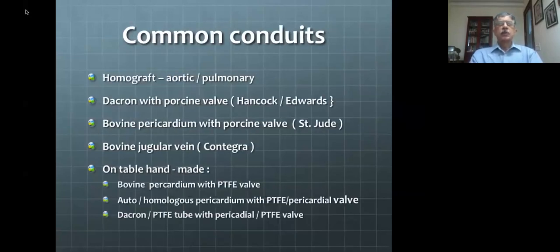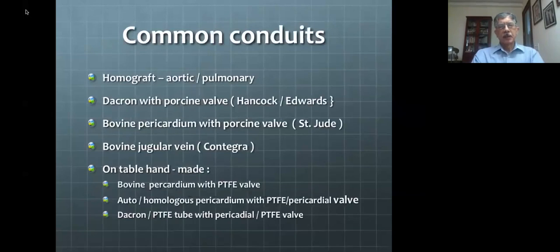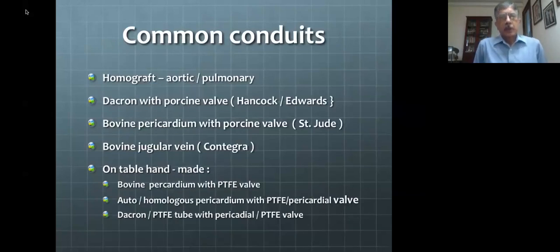What are the common conduits in use? There are many commercial conduits available in different countries; I'll give examples to describe what material is being used and whether they are commercial or homemade. One of the earliest conduits used are homograft conduits. Homografts mean tissue harvested from a deceased human being, and homografts can either be aortic or pulmonary — that is, the aortic valve with ascending aorta, or the pulmonary valve with pulmonary artery.